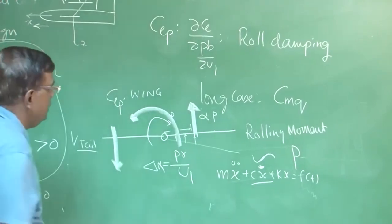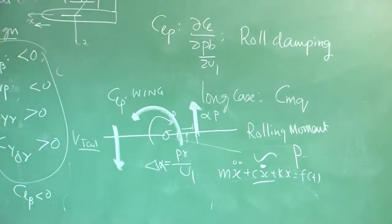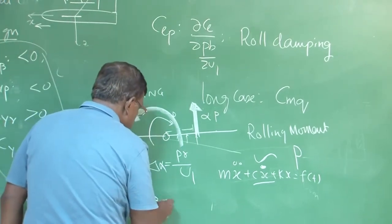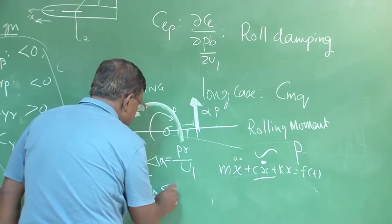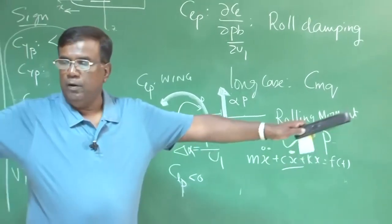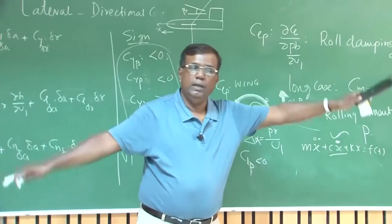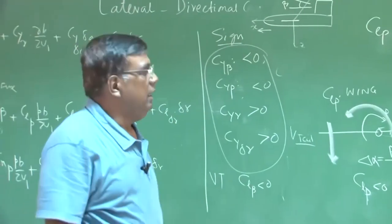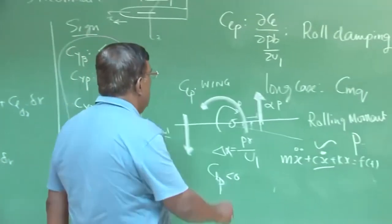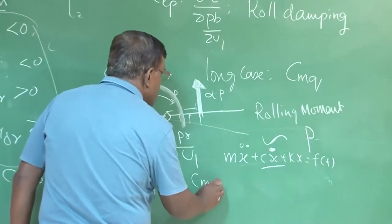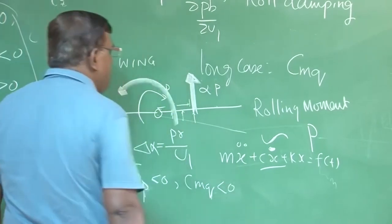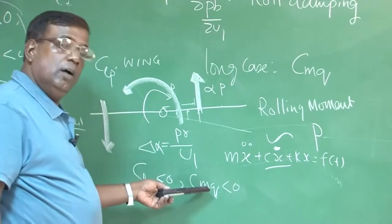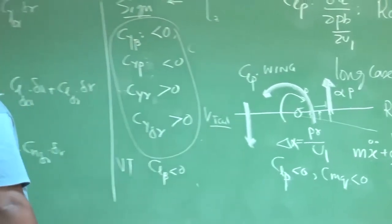The opposing moment is proportional to the rate, attributable to damping derivatives. As in a second-order system: C*x-dot plus k*x = f(t), the term C*x-dot represents damping. So Cl_p is the roll damping derivative and it is negative, analogous to Cm_q for the longitudinal case.